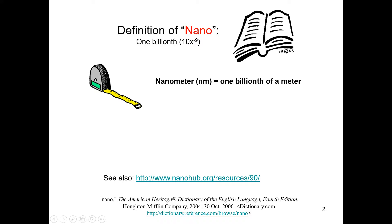What does nanometer actually mean? Nanometer means one billionth of a meter. Just like that, if you put something else — instead of meter, you put gram — it would mean nanogram. Nanogram would mean one billionth of a gram.